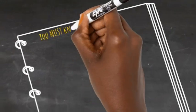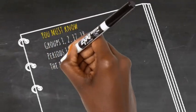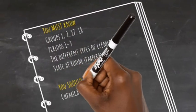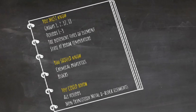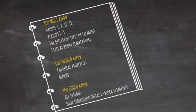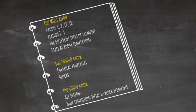So, assuming you've nailed all the things we told you to learn in the last video, here is your must, should and could. You must know groups — especially groups 1 and 2, and 17 and 18. You need to know the non-metals, the metals and the metalloids, and you need to know which elements are liquids and which are gases. You should know the different blocks — S, P, D and F — and chemical properties associated with elements and groups of elements. And you could learn the non-transition metal D block elements and the periods.